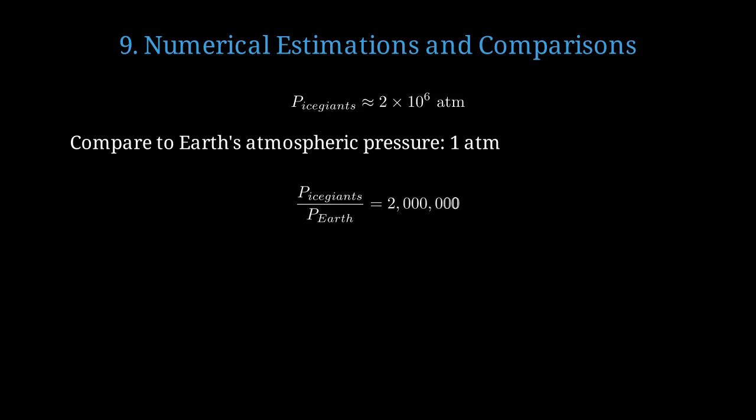Let's put these extreme conditions into perspective with some numerical comparisons. The pressure inside ice giants is about 2 million atmospheres. Compare this to Earth's atmospheric pressure of just one atmosphere at sea level. The ice giant pressure is 2 million times greater than Earth's surface pressure. To visualize this, it's like having the weight of 2,000 elephants concentrated on a single postage stamp.